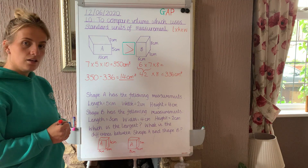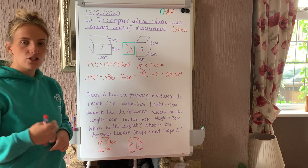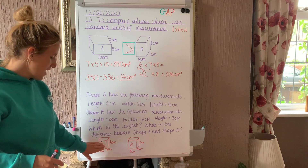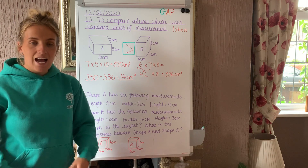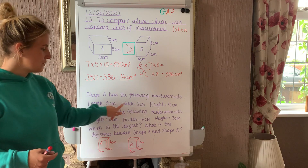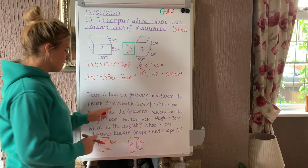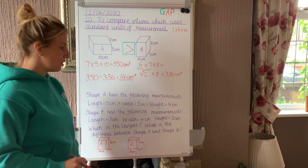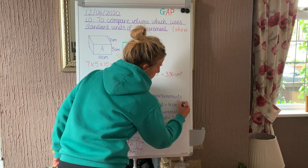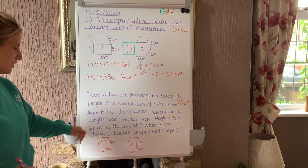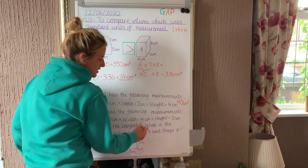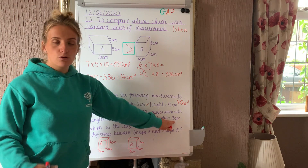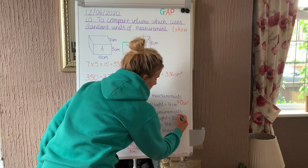Which is the largest, and what is the difference between shape A and shape B? We need to calculate the volume using length times width times height. For shape A: 5 times 2 is 10, times by 4 is 40 centimetres cubed. For shape B: 3 times 4 is 12, and 12 times 2 — or double 12 — is 24 centimetres cubed.